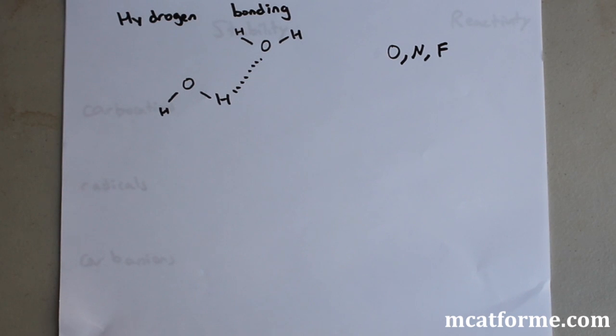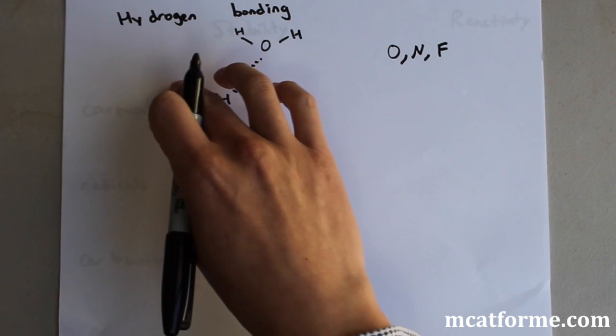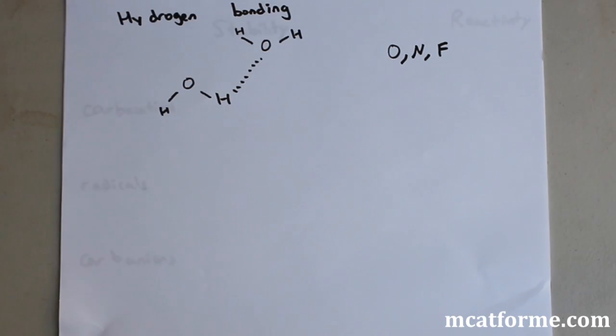Anything with an O, N, or F that also is attached to a hydrogen, at least one of them, has to be sandwiched in between an H like that. So we have O, H, and an O.